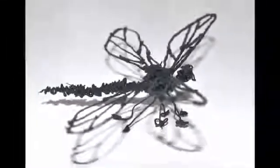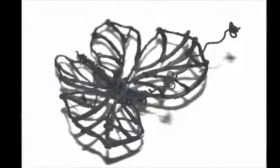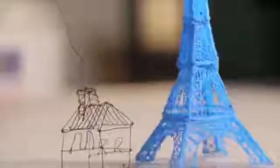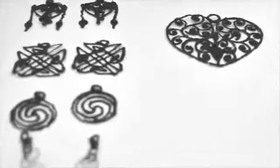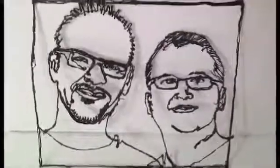So how does it work? 3Doodler uses cutting-edge patent-pending technology to heat and cool plastic as it passes through the body of the pen. Just like a 3D printer, the plastic cools rapidly and becomes hard.